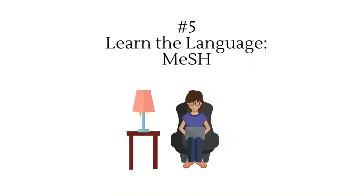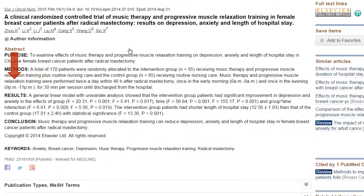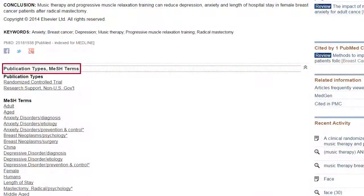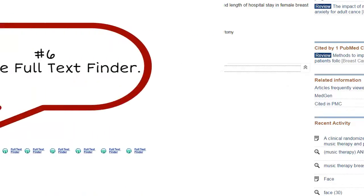Number five: learn the language. Try to become familiar with the language of PubMed — MeSH. MeSH stands for Medical Subject Headings. Indexers tag MeSH terms to most articles in PubMed. To find the MeSH terms, look below the abstract and click on Publication Types, MeSH terms. Becoming familiar with MeSH can help you search more effectively.